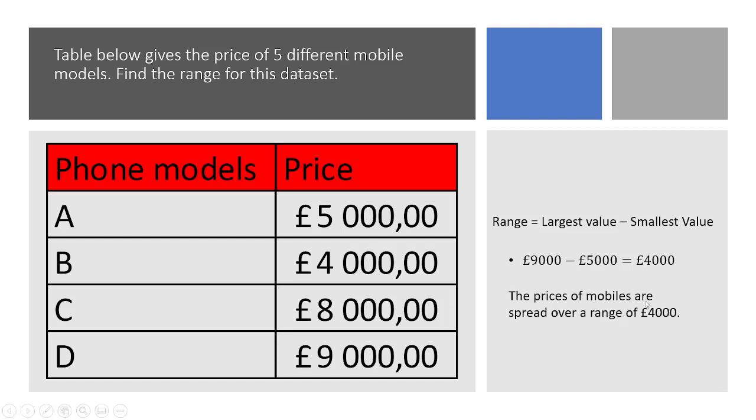as we can see here. And that will give us £4,000. So the price of mobiles are spread over a range of £4,000. So obviously mobile phones don't cost this much. You should probably remove a zero or something to get the cell phones. But we'll give you the same answer, yeah? So we'll say £400 instead.